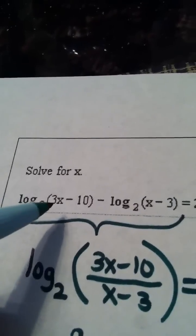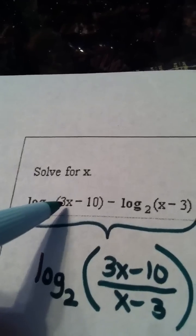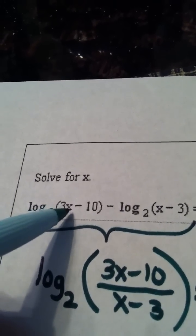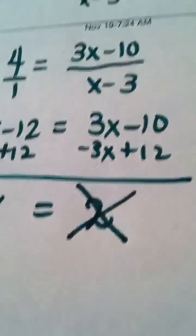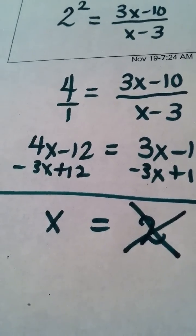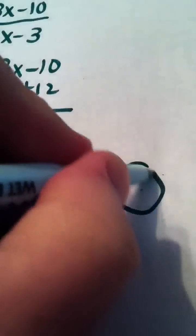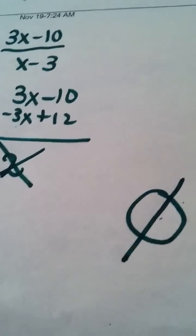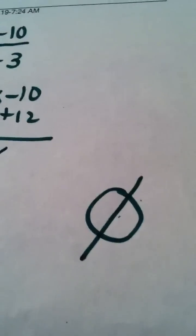And I want to check that answer by going back to the original problem. 3 times 2 is 6, 6 minus 10 is negative 4. Nope, in other words it makes the argument negative. Therefore my solution to this equation is the empty set or as some of you write no solution, and we're done.